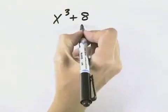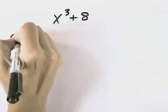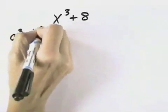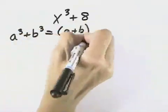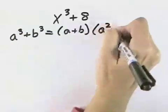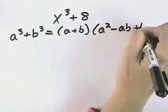It is a sum, and it does appear to be perfect cubes. So that means if we have a³ + b³, we can break it down into (a+b)(a²-ab+b²).